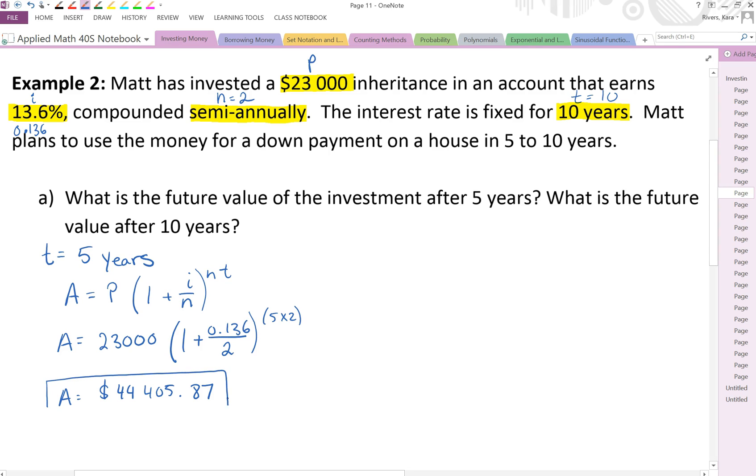Punch that into your calculator. And you get $44,405.87. Make sure that your final answer is clear. So after 5 years that would be the down payment that Matt has. I'd like you to go ahead and do this for 10 years and see how that future value changes. The answer you should get for the future value is $85,733.96.